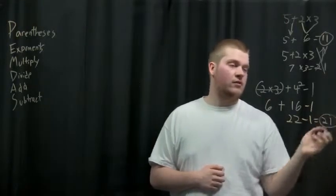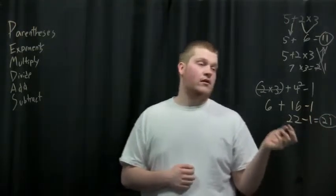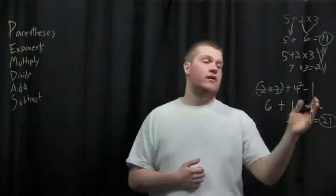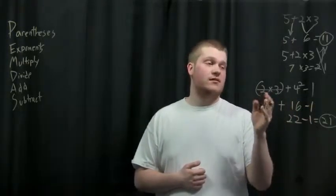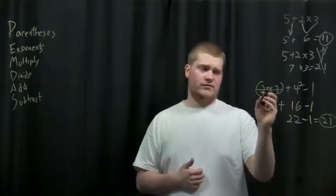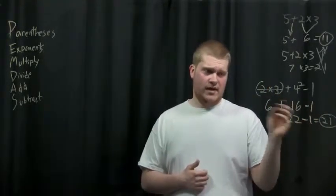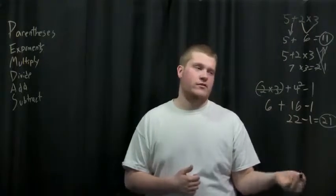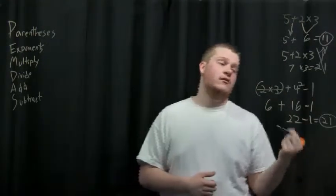Now it also just so happens that if you had gone left to right in this, you would have had 6 + 4² - 1, so it would have been the same thing. But you could have messed up if you just done 6 + 4 and then squared that, which would have been 36, and you would have got 35 as your final answer. But instead the correct answer is actually 21.